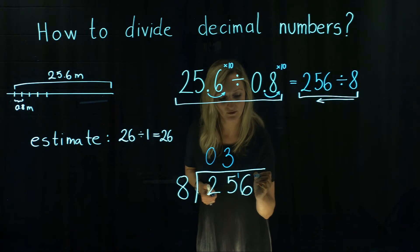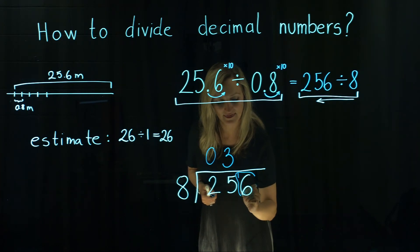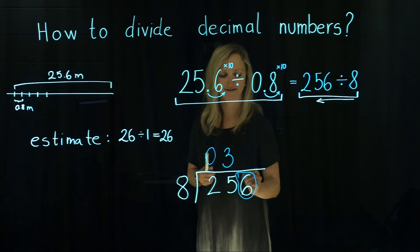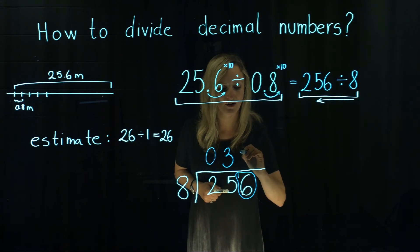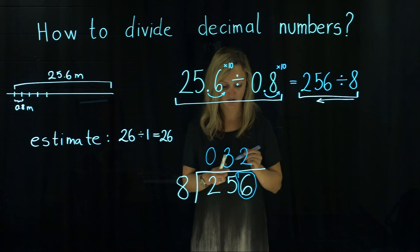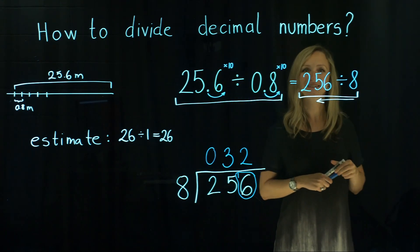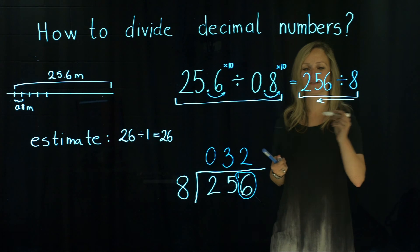Then our remainder and next digit. 1 and 6 makes 16. So how many times 8 goes into 16? We have no remainder. And that is actually the correct answer for our question.